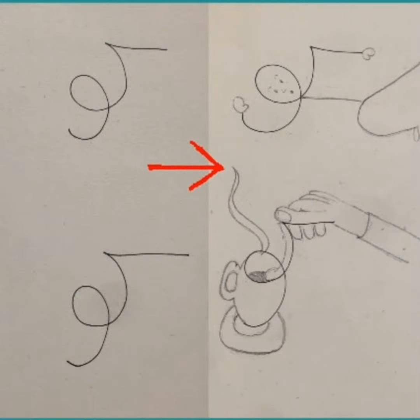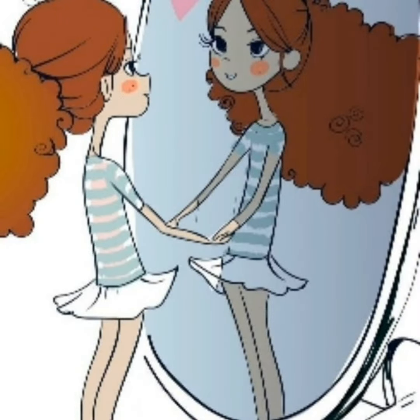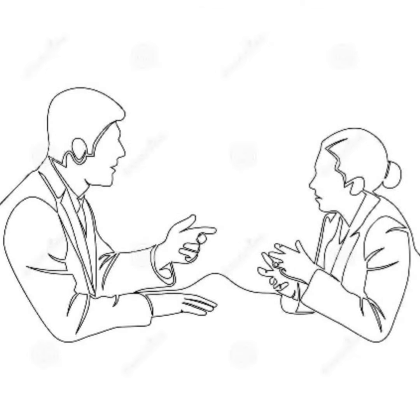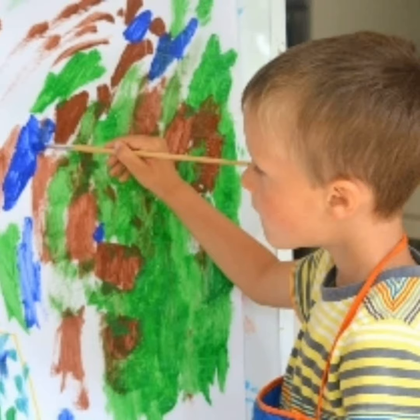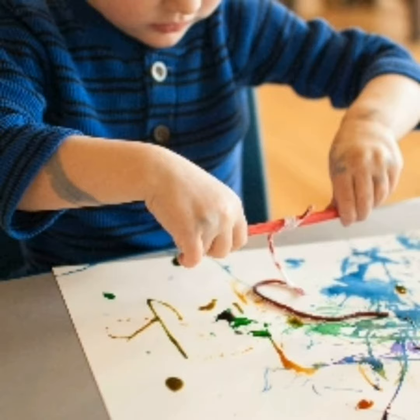Next is draw yourself as an animal. The client is asked to make themselves as an animal they think of. This is a good group-building technique because the discussions are usually funny as well as revealing — for example, one person may have drawn you as a dove while another drew you as an elephant, which is both revealing and funny.